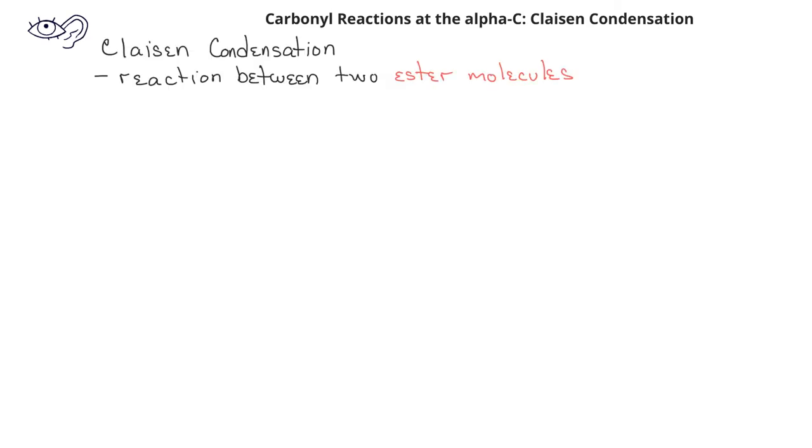A Claisen condensation is a reaction between two ester molecules, which results in the formation of what's known as a beta-keto ester.